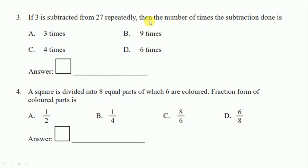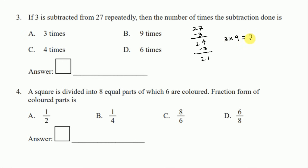Question number three: if three is subtracted from twenty-seven repeatedly, then the number of times the subtraction is done. We subtract three from twenty-seven repeatedly. Using a shortcut: three into nine equals twenty-seven — three nines are twenty-seven. That means if we subtract three from twenty-seven, it will be nine times. The right answer is option B, nine times.